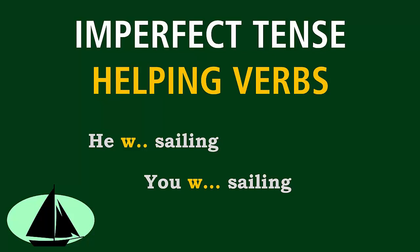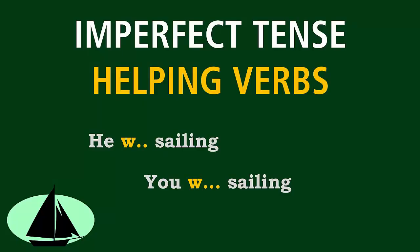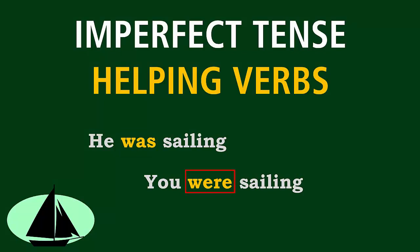Can you think of any English helping verbs that begin with W? That's right! You use the helping verbs WAS and WERE to translate the imperfect tense in Latin.